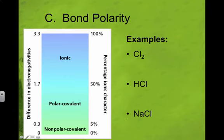So chlorine was 3.0 minus 0.9. That should give you 2.1. And if it's higher than 2.1 or 2.1 or higher, it's going to be ionic.